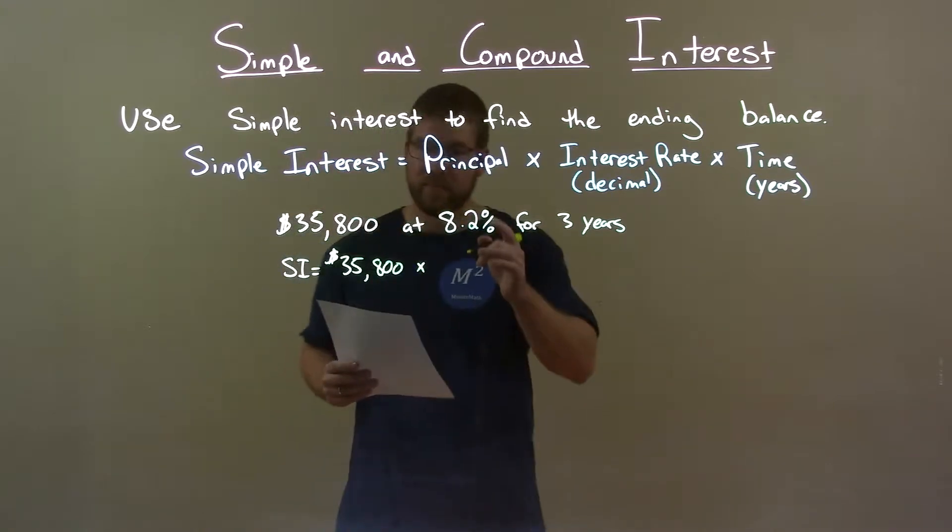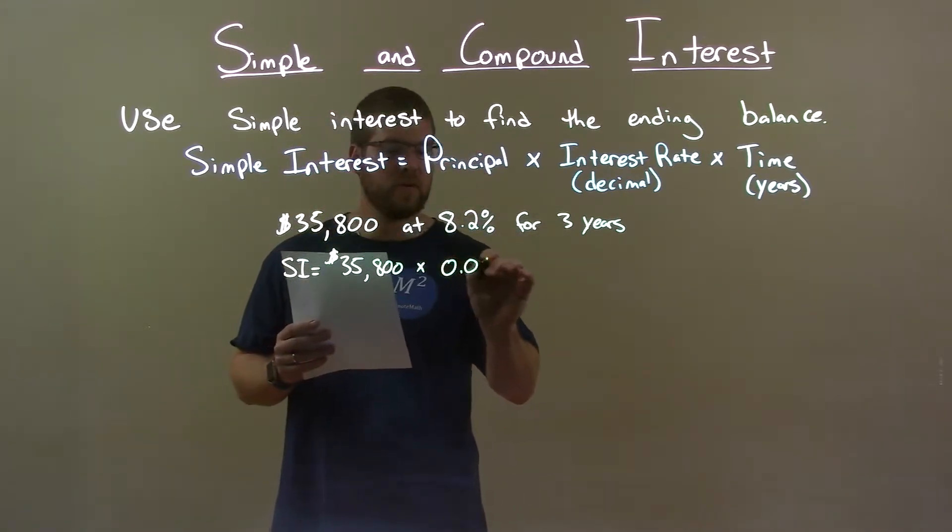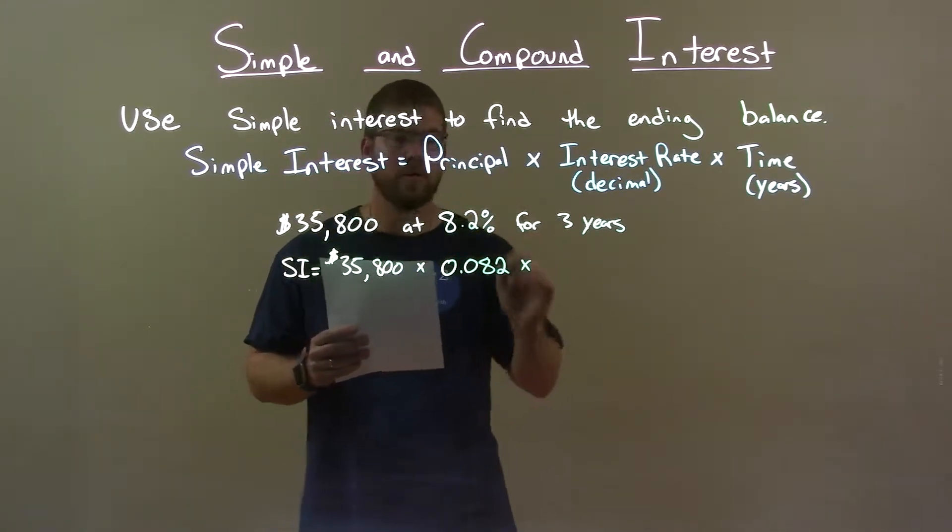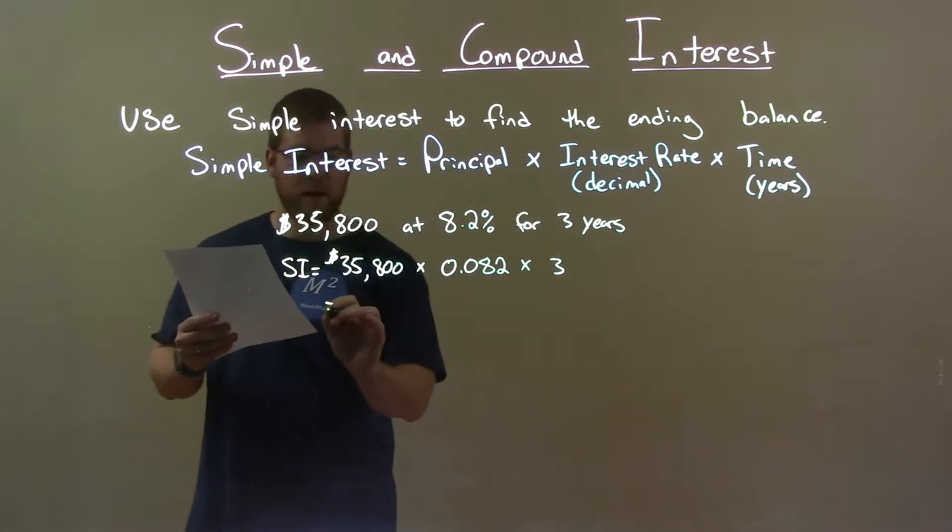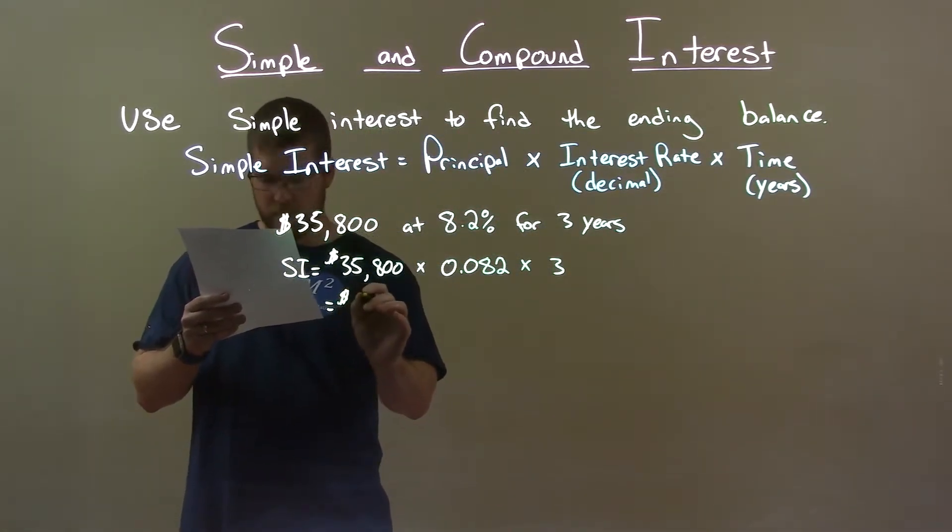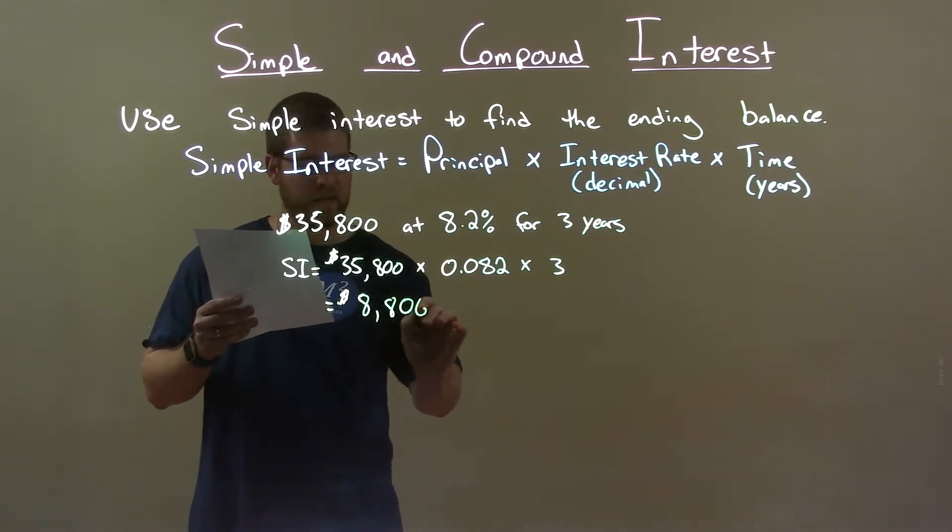Multiply that by my interest rate as a decimal, 0.082, for 3 years, time in years. This gives me a value of $8,806.80.